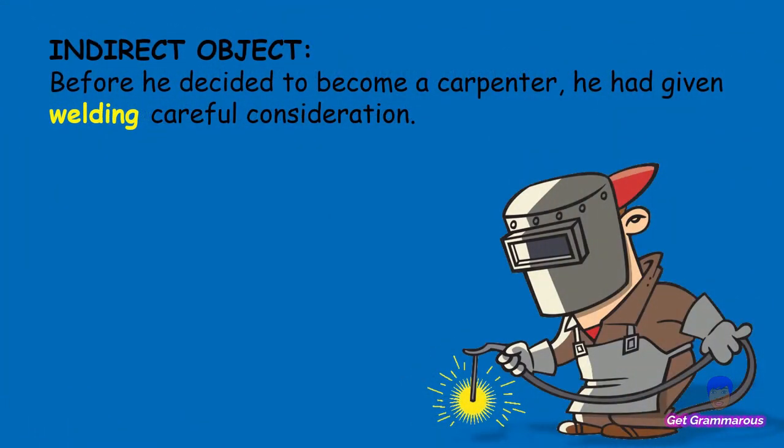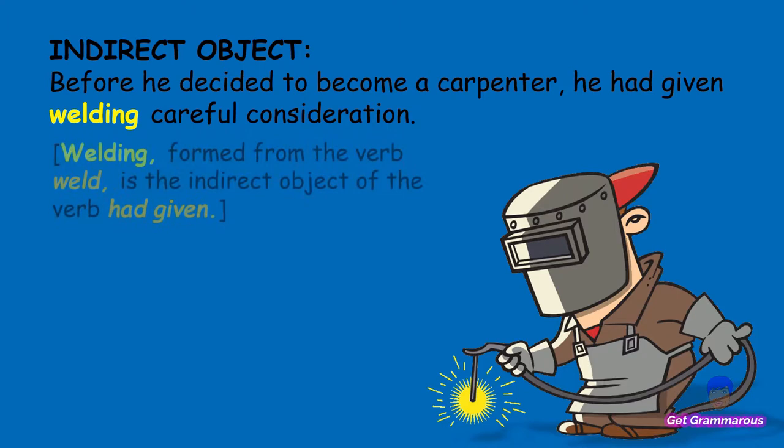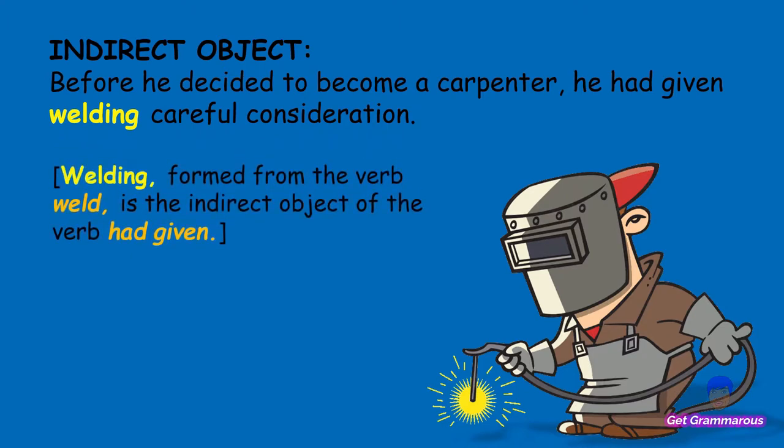Gerund used as an indirect object: 'Before he decided to become a carpenter, he had given welding careful consideration.' Welding, formed from the verb weld, is the indirect object of the verb had given.